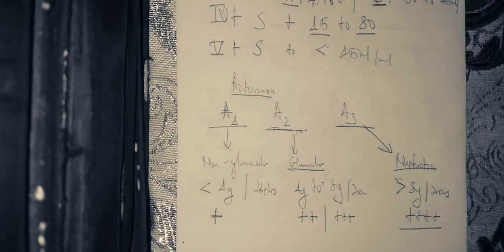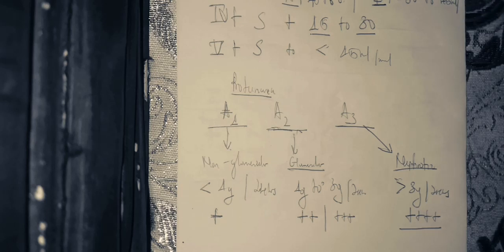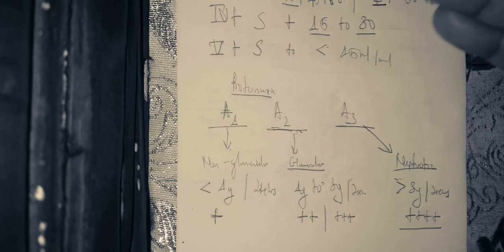That concludes the introduction to chronic kidney disease, including the definition and the CKD classification. We will now move on to the second element: the risk factors of acute kidney injury and chronic kidney disease.